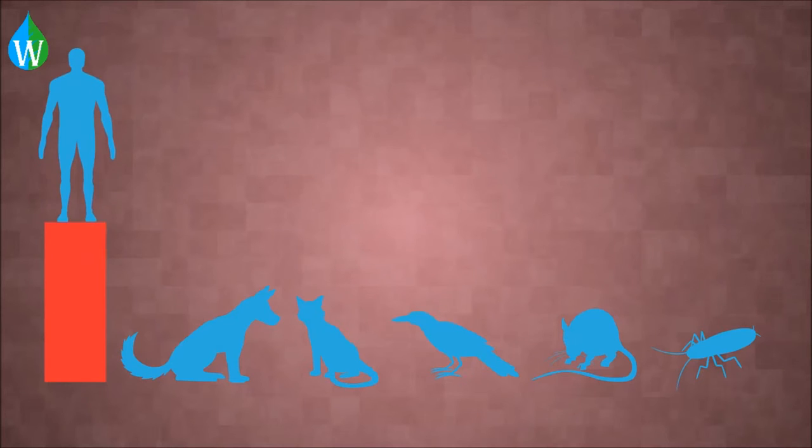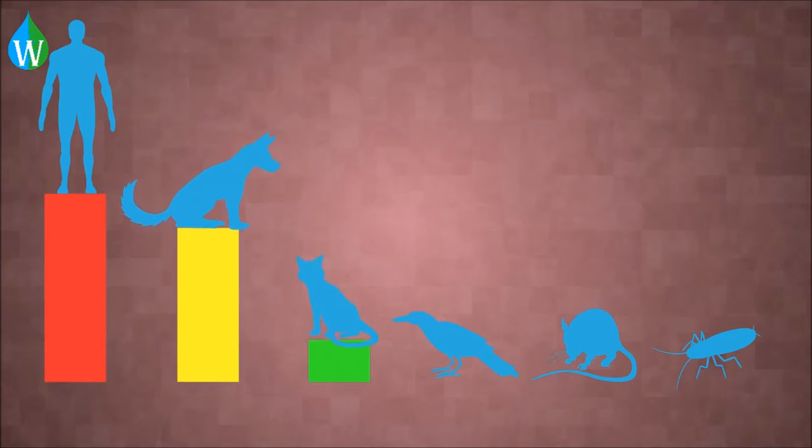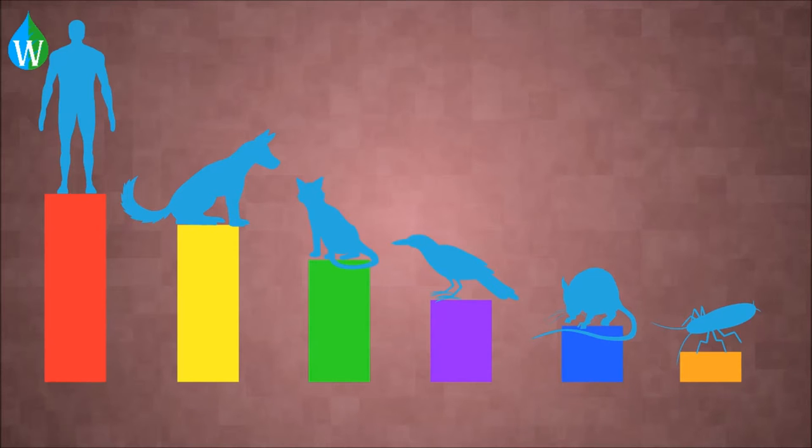While humans are generally the dominant species in an urban environment, they are hardly the only ones. Learning to live with other species in an urban environment and understanding how our activities affect those species is another important aspect of urban ecology.